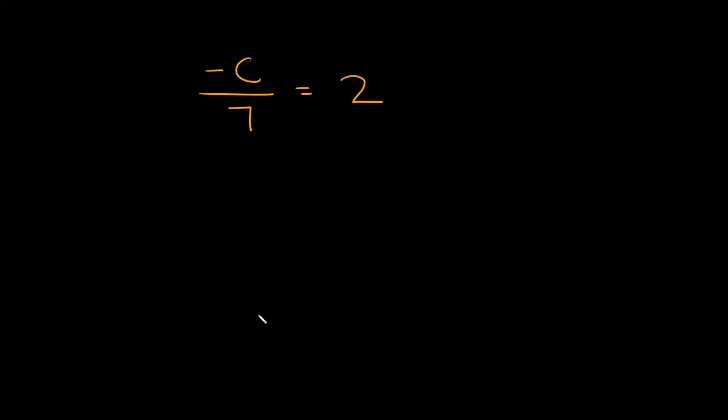What's up, you freaking geniuses? In this video I'm going to teach you how to solve for a negative variable. Here we have negative c divided by 7 is equal to 2. So how are we going to solve this?